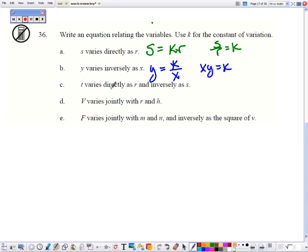T varies directly as r and inversely with s. So we'll start with the directly and then inversely with s.